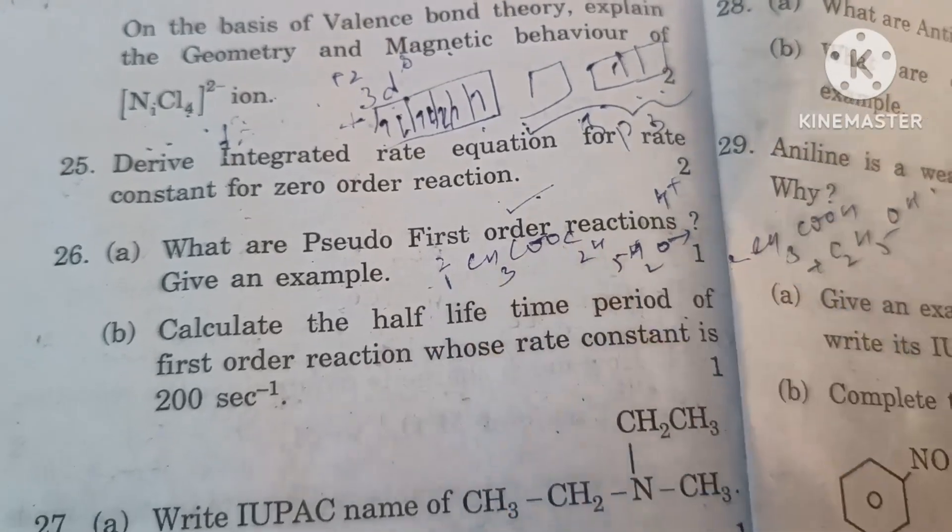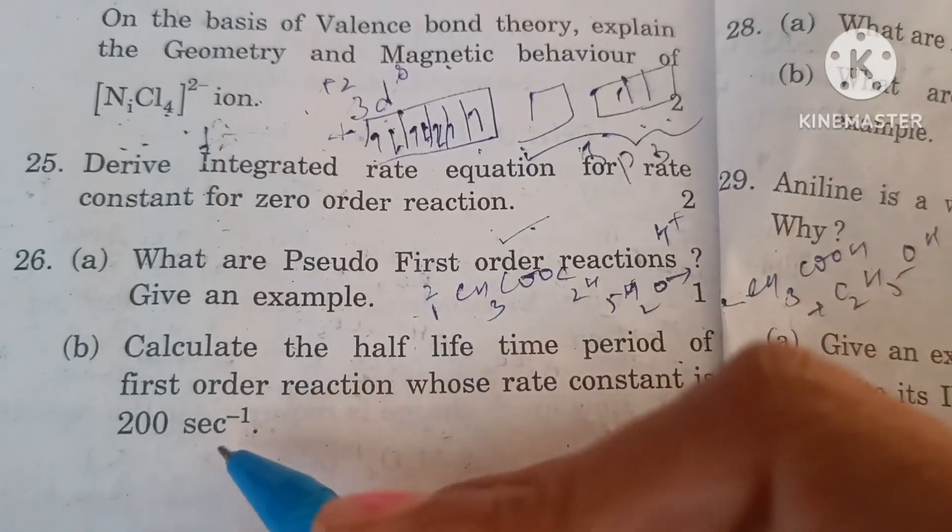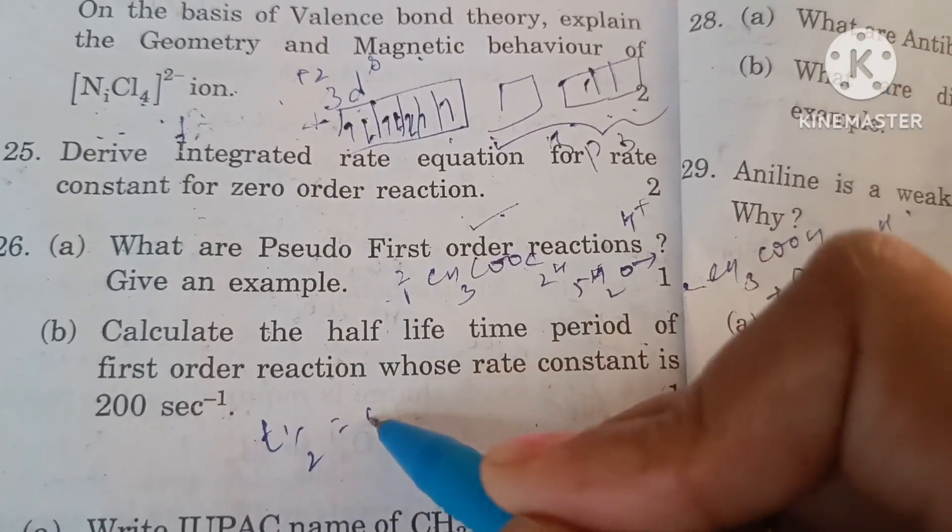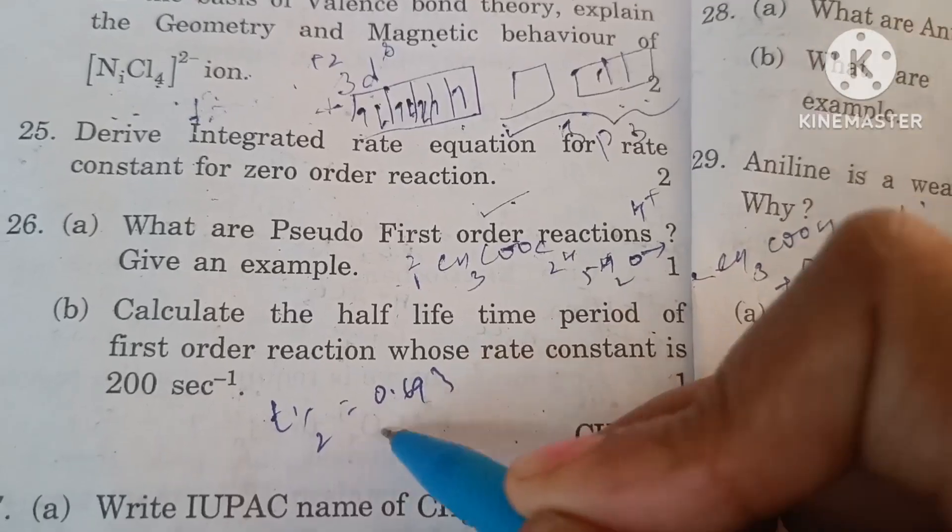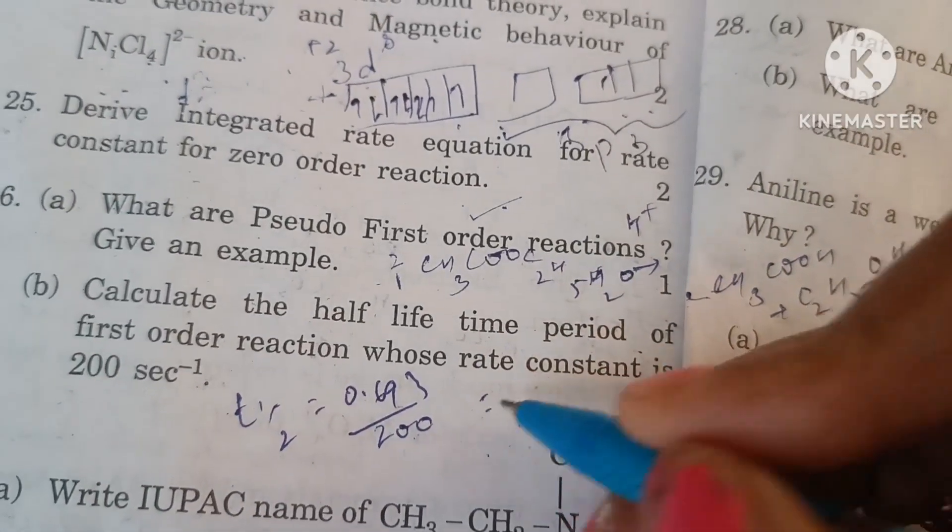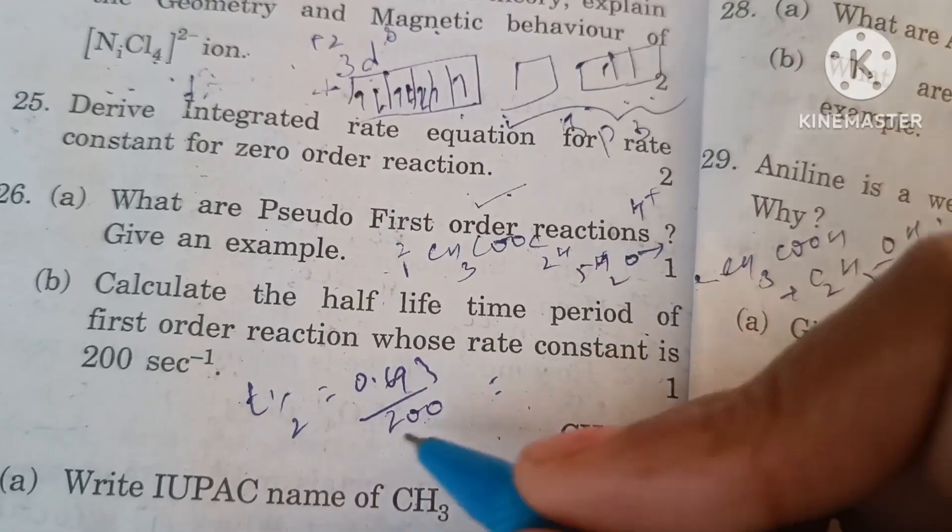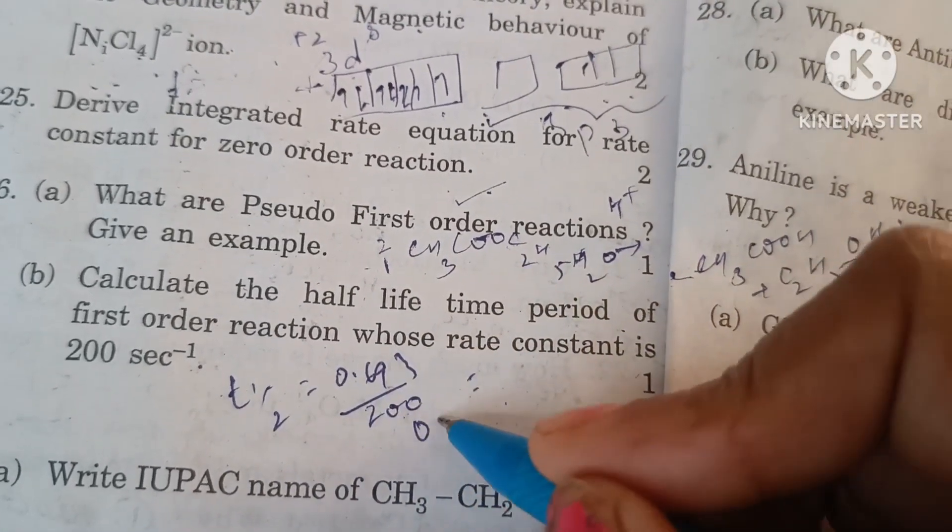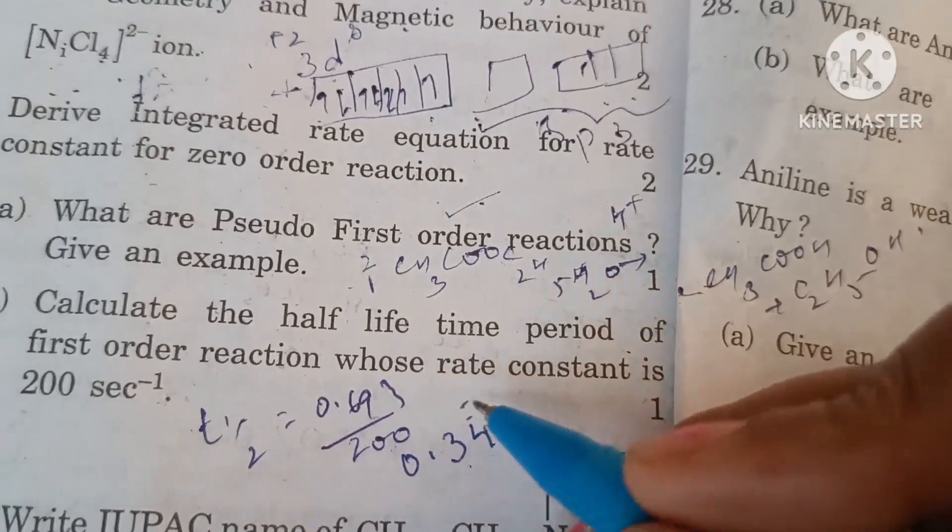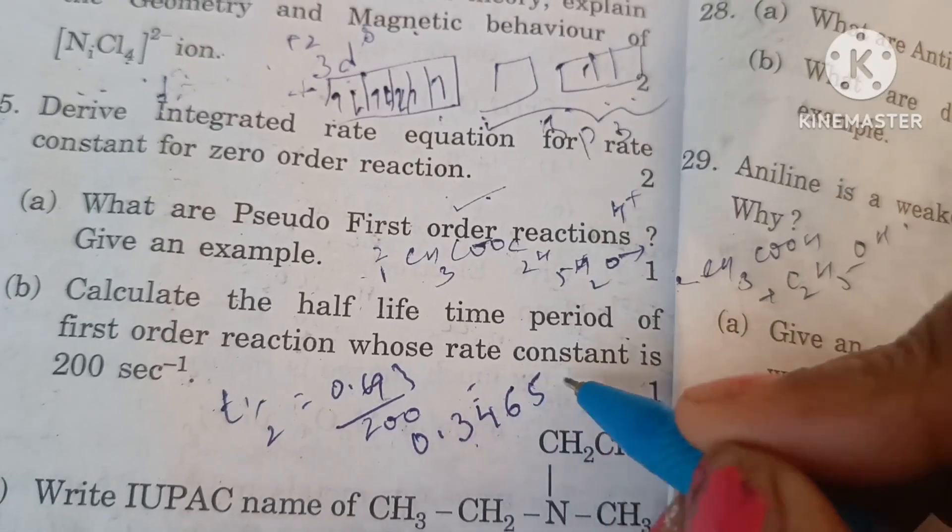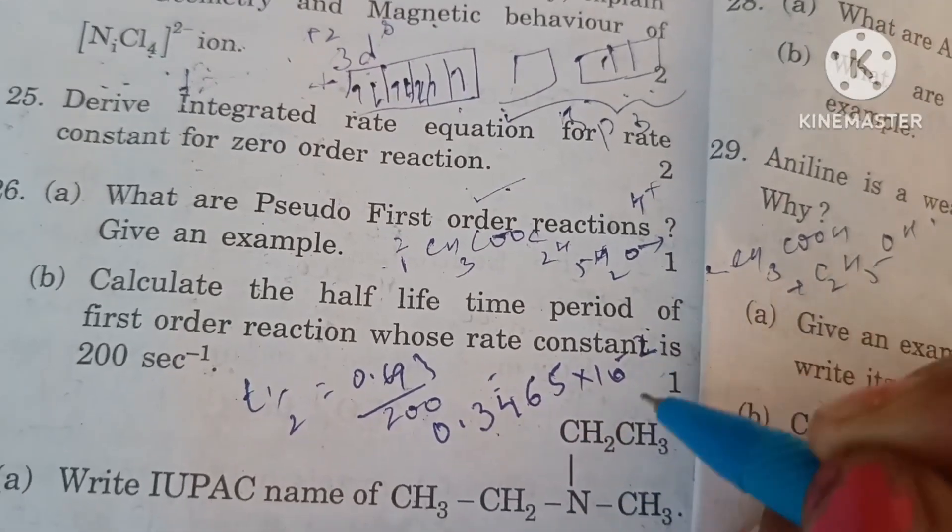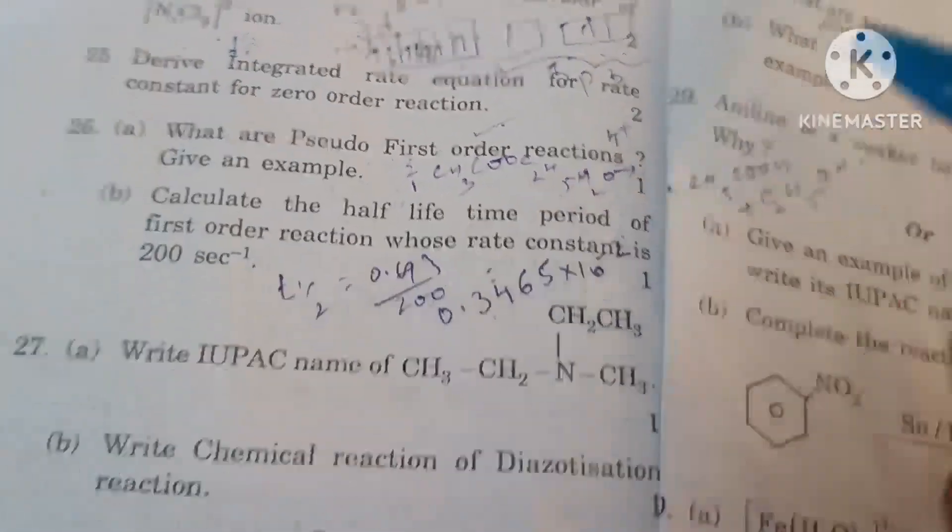Calculate the half lifetime period of first order reaction whose rate constant is 200 second inverse. We know that t½ = 0.693/k. k is 200 seconds, so it comes out to be 0.346 divided by 2 is into 10 raised to -2 or 3.465 × 10⁻³. This is half lifetime period.